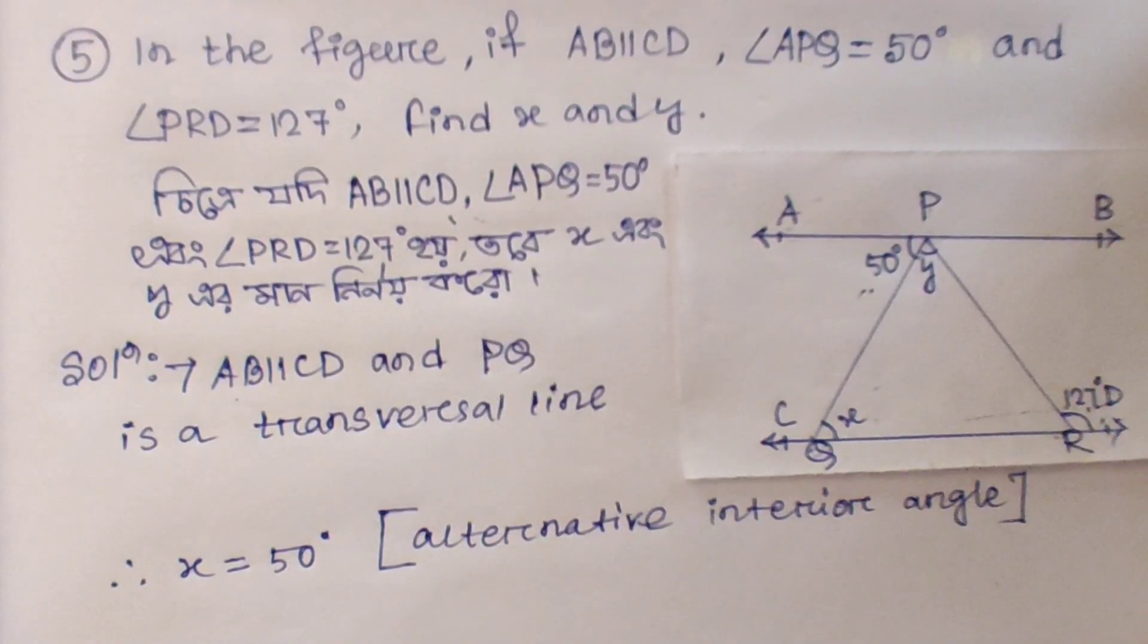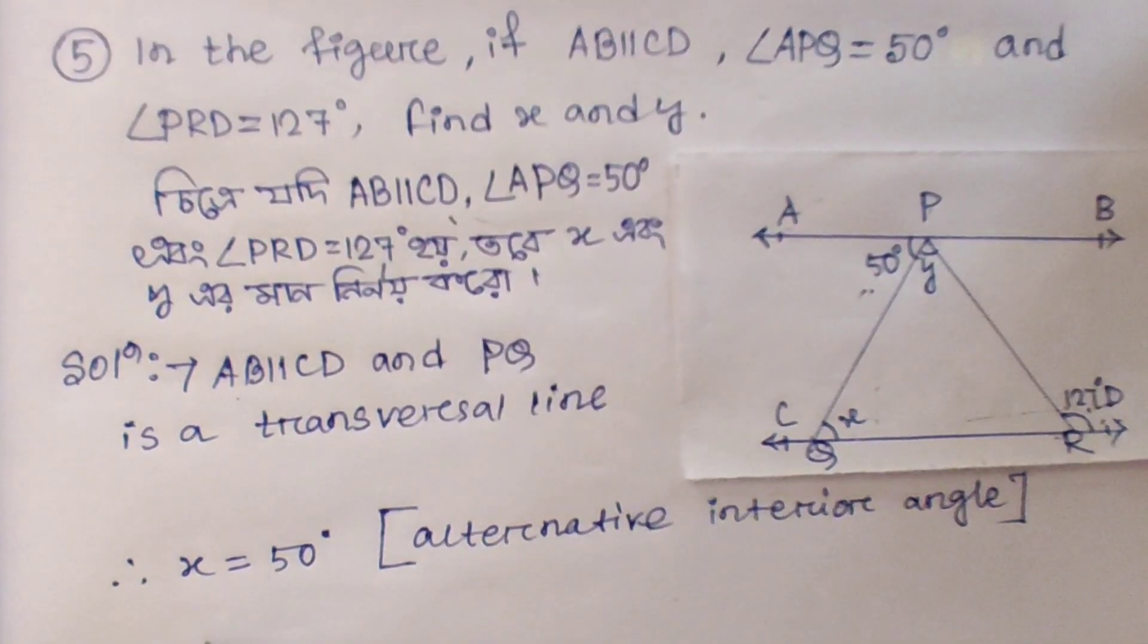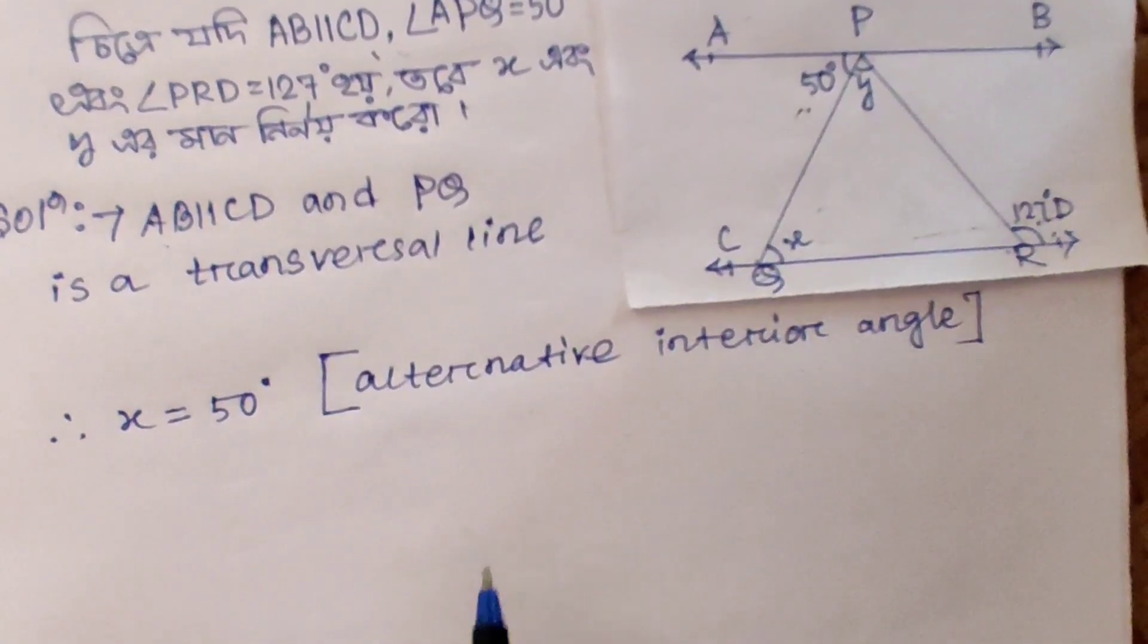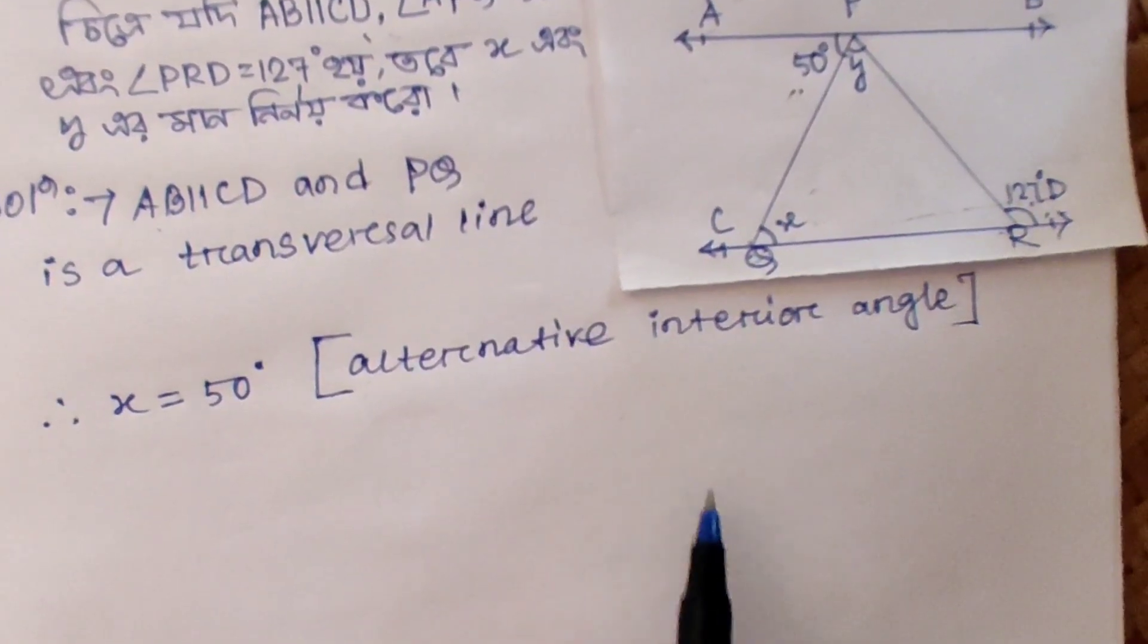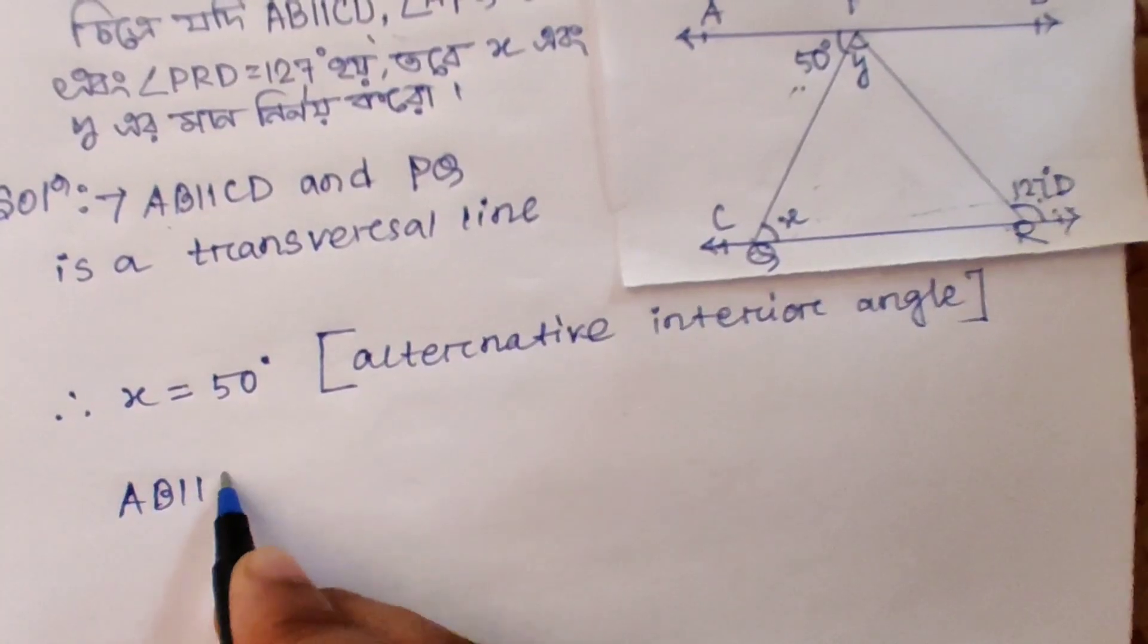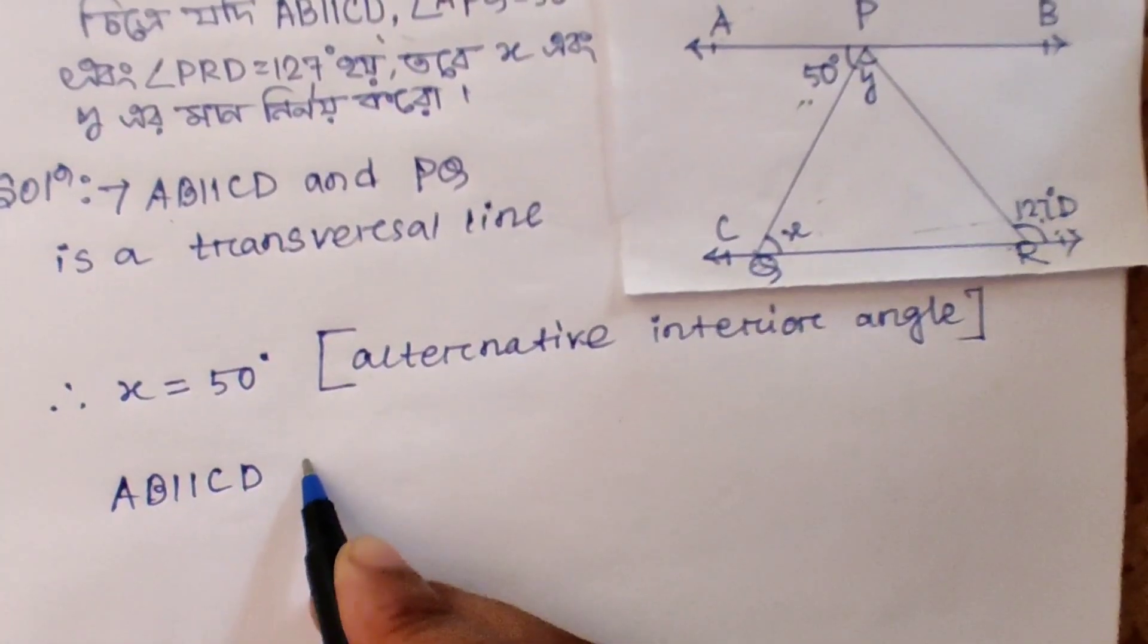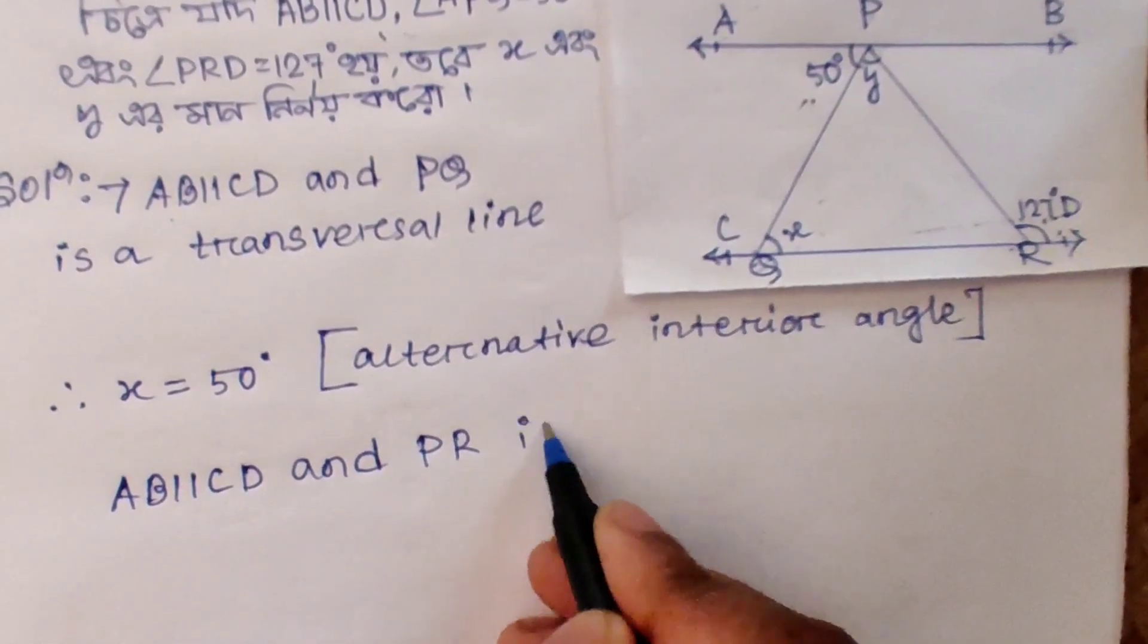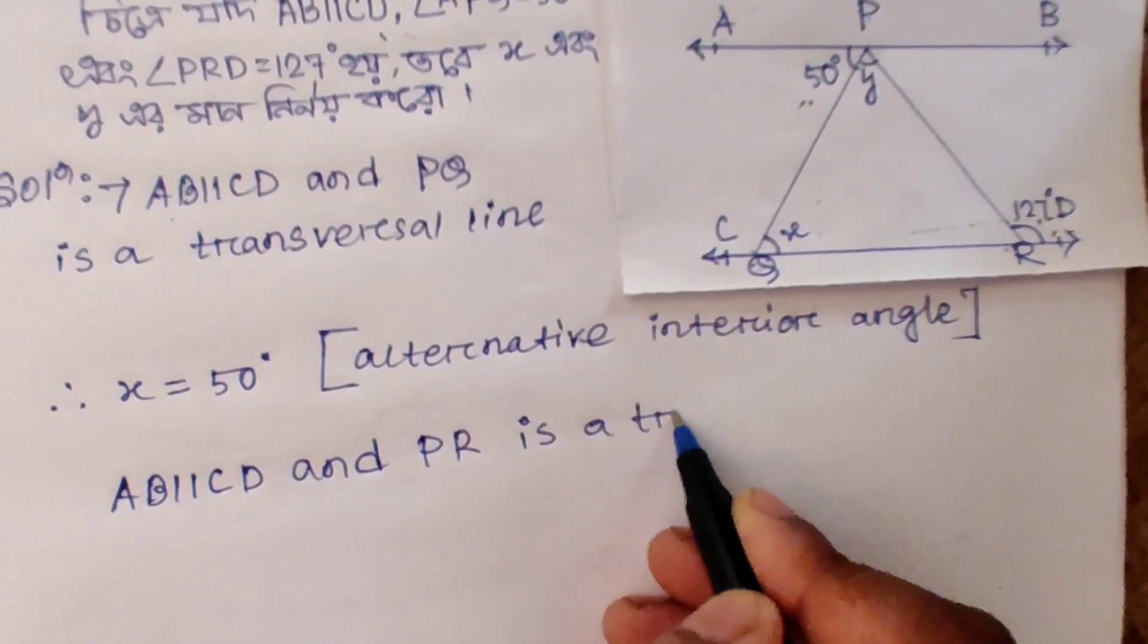Similarly, AB parallel to CD and PR is a transversal line.